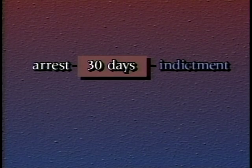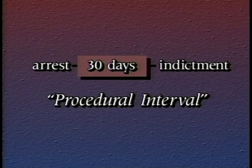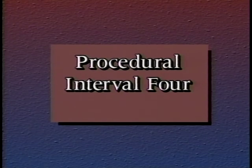For example, the Act limits the amount of time that may pass between a defendant's arrest on a complaint and the return of an indictment against him — the time limit is 30 days. In this example, the procedural events are the arrest and the return of an indictment, and the 30-day interval between them is called a procedural interval. The procedural intervals tracked in ICMS Criminal are numbered and abbreviated — for example, procedural interval 4 is referred to as P4.